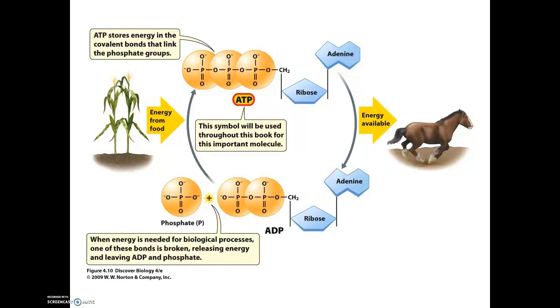When that energy is released from the ATP, ATP loses one of those phosphates. So instead of being adenosine triphosphate, it becomes adenosine diphosphate or adenosine with two phosphates added to it. ADP does not have as much energy as ATP.